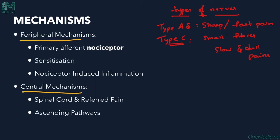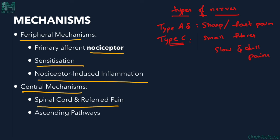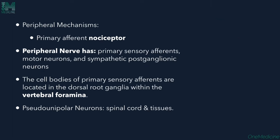The mechanisms of pain include a peripheral mechanism and a central mechanism. The peripheral mechanism involves the peripheral afferent nociceptor, sensitization, and nociceptor-induced inflammation. Central mechanisms include the spinal cord, referred pain, and ascending pathways.